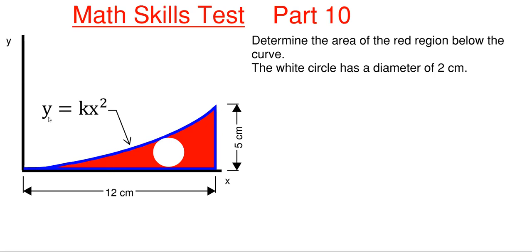We are shown or told that this curve is of the value y equals kx squared and we are given dimensions in the x-axis of 12 centimeters from an origin point and then 5 centimeters vertically in the y direction from the origin point, and we're also told that this little white circle has a diameter of 2 centimeters.